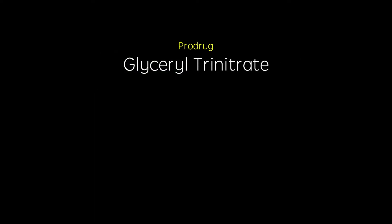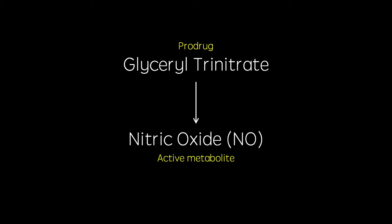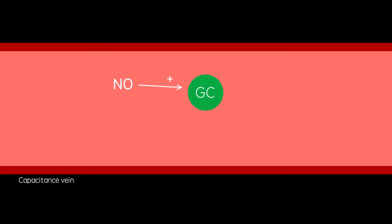GTN is actually a prodrug and is metabolised in the bloodstream, producing nitric oxide. Nitric oxide diffuses into capacitance veins where it activates guanylyl cyclase. This enzyme converts GTP to cyclic GMP, which goes on to activate protein kinase G. Protein kinase G activates myosin phosphatase, an enzyme which dephosphorylates the regulatory light chains of myosin. This prevents myosin from forming cross-bridges with actin molecules in smooth muscle cells and thus causes vasodilatation.